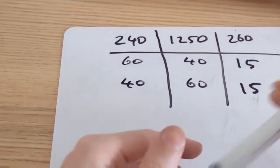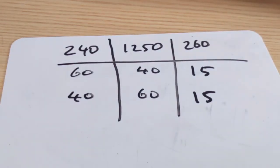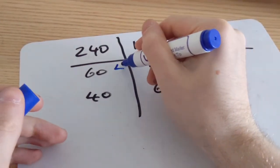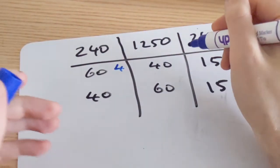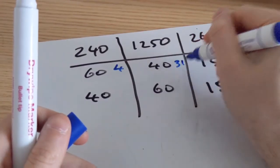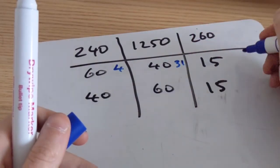We do the same thing. We just divide the length of the box by the length of the container. So you do 240 into 60 equals four times. 1250 divided by 40 is 31. And then 260 by 15 is 17.